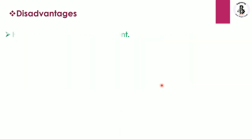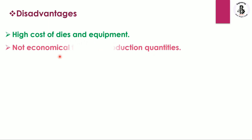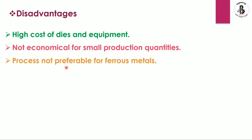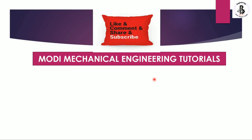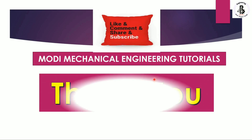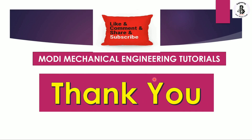Some disadvantages: high cost of dies and equipment, not economical for small production quantities, the process is not preferable for ferrous metals, and part geometry must allow easy removal from the die cavity. I hope you understood this. If you like this video, please subscribe and share more mechanical engineering tutorials. Thank you so much and keep watching.